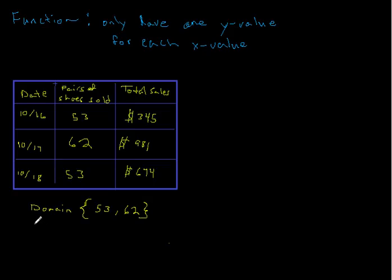But now let's look at the range. And my range is going to be the three values for total sales. So 345, 981, 674. And now I can close those brackets with the curly brace.